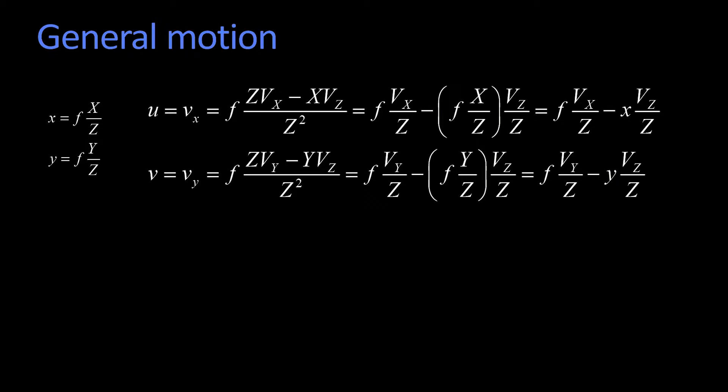We're going to call little u and little v the velocity in x and the velocity in y. These are just the derivatives in time. So u is the velocity in x, dx/dt, and v is dy/dt.